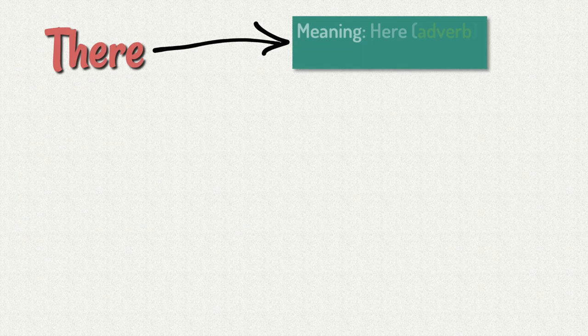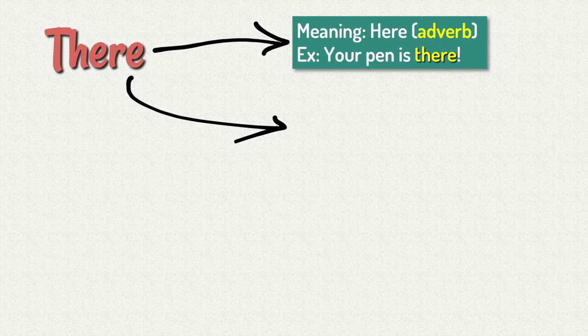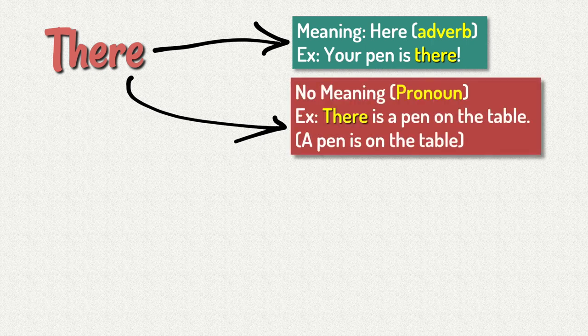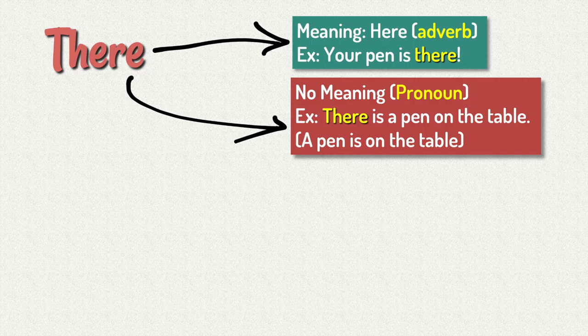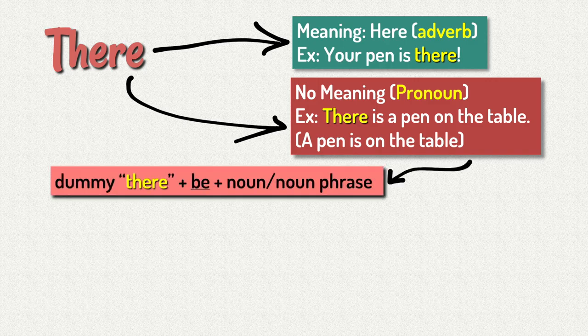Now let's look at there. There means here as an adverb. For example, your pen is there. The second usage of there is as a pronoun, and there here has no meaning. For example, there is a pen on the table. It's the same as saying a pen is on the table. So we'll call it the dummy there.